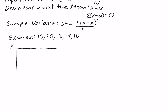In our table, the first column will have the values, and the second column will have the deviations about the mean, x minus x bar. The sample mean of this data is 15. So 10 minus 15 is negative 5, 20 minus 15 is 5, 12 minus 15 is negative 3, 17 minus 15 is 2, and 16 minus 15 is 1. If we sum this column, the deviations about the mean, we get 0, which is always going to be true when we sum the deviations about the mean.